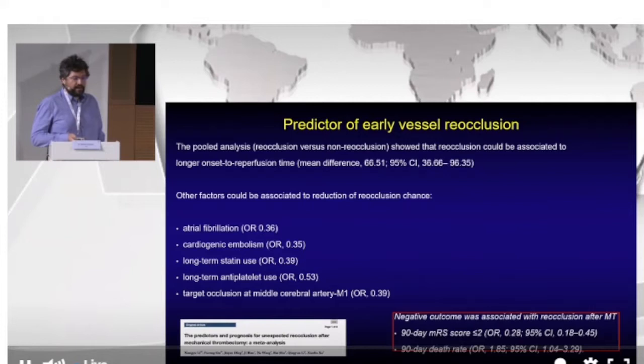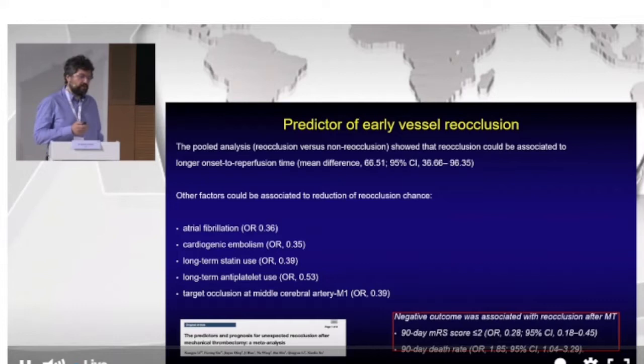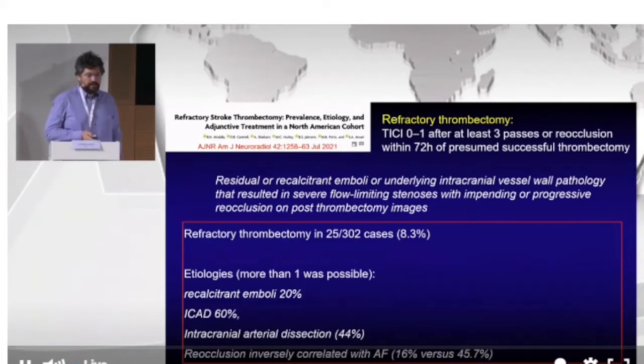One factor is long onset-to-reperfusion time. Atrial fibrillation is a positive protective factor, probably because the composition of the clot is different in this case. Cardiogenic embolism setting, anti-platelet use, and M1 location are also associated with a reduction in early reocclusion occurrence.